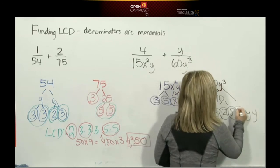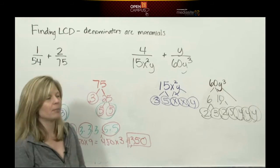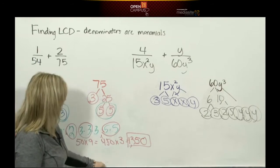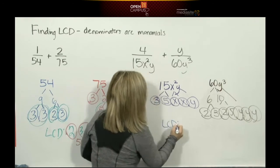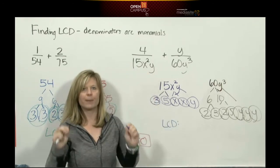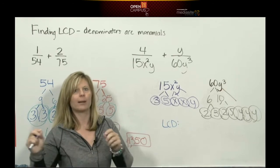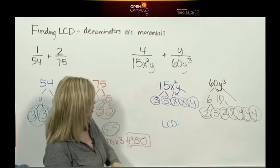y³ is not prime—y³ is y times y times y. So now I have that denominator in primes. Now let's get the LCD. To get the LCD, you take the most of every prime number or every prime term.